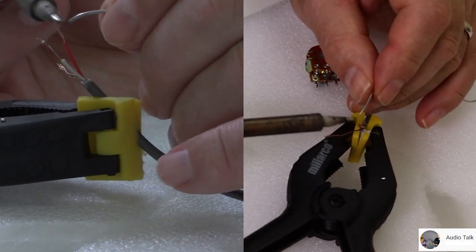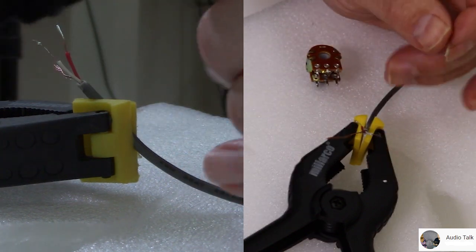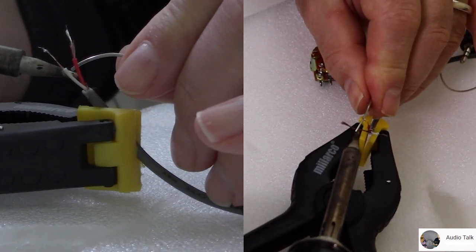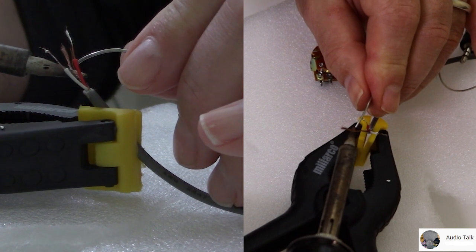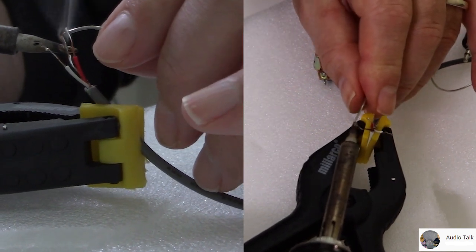A linear will work, but it will be up at full basically at half volume, so it wouldn't make sense to use. Try to get a logarithmic potentiometer.